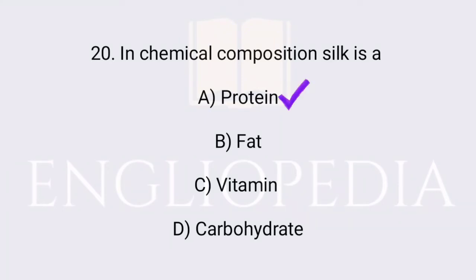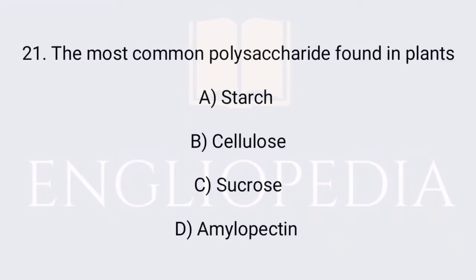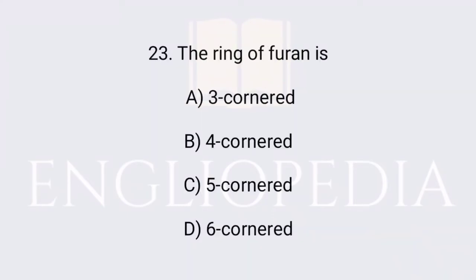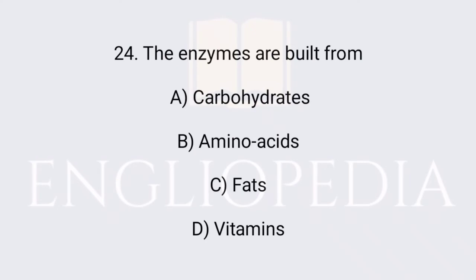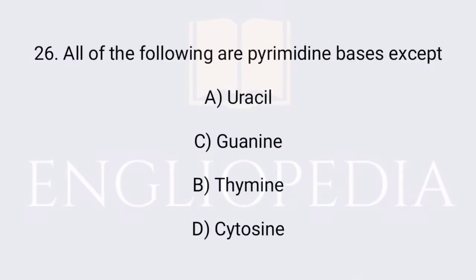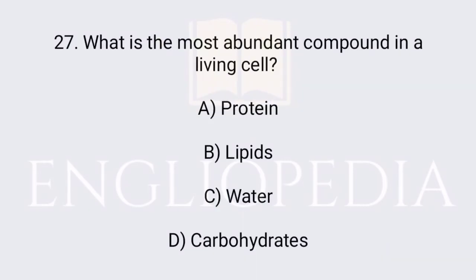In chemical composition, silk is a protein. The most common polysaccharide found in plants is cellulose. The percentage of DNA in a bacterial cell is one percent. The ring of furan is five-cornered. Enzymes are built from amino acids. Cotton fiber is cellulose. All of the following are pyrimidine bases except guanine.